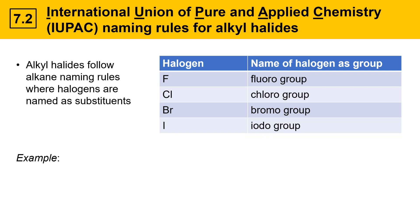Here's an example of an alkyl halide and how to name it. This molecule has one halogen attached to it. To name this under alkane rules, you first have to find the longest continuous carbon chain in the molecule. You should go through and try to find a path through the molecule that gives you the longest carbon chain. Here's one option: carbon 1, 2, 3, 4, 5, 6, 7 if you go that way.